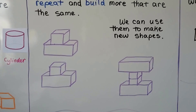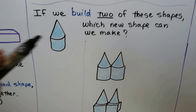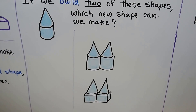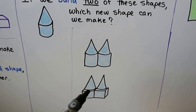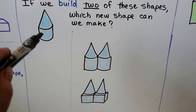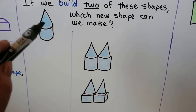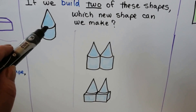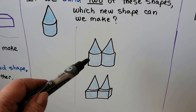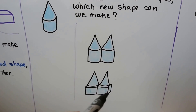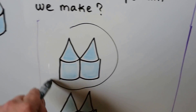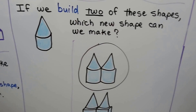So we can make new shapes. If I build two of these shapes — and we're going to pretend they're glued together — which new shape can we make? When we look at what we've built, we've got a cone and a cylinder. That means if I've got two of these, then I've got two cones and two cylinders. One choice doesn't have cylinders, it has cubes, so it would be the other one — that's what we would make if we made two of those and put them together.